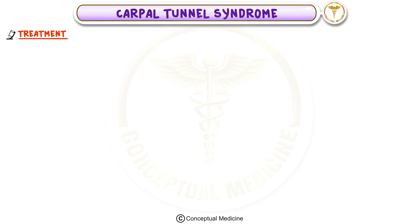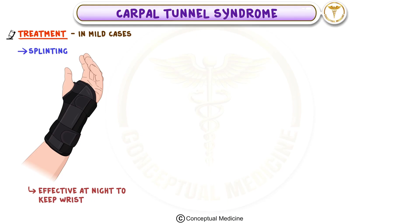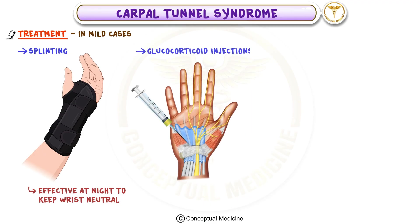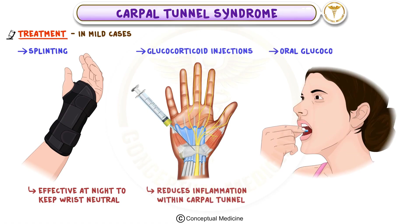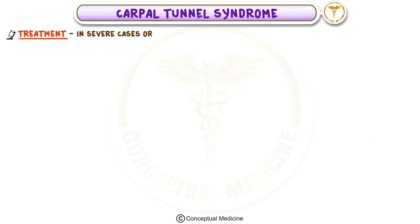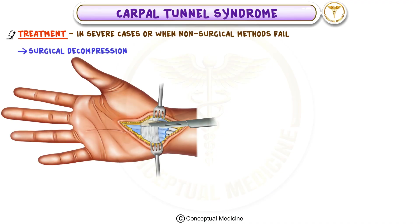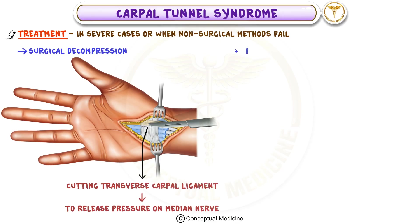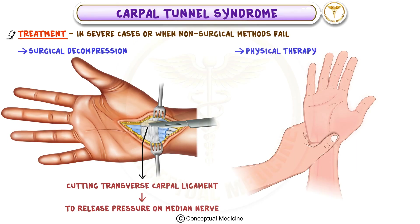Treatment depends on the severity of the condition. In mild cases, we start with splinting, especially at night, to keep the wrist in a neutral position and reduce pressure on the nerve. If splinting doesn't provide enough relief, a doctor may inject glucocorticoids directly into the carpal tunnel to reduce inflammation. Oral glucocorticoids may be used as a last resort if injections are not effective. In severe cases, or when non-surgical methods fail, surgical decompression is performed, involving cutting the transverse carpal ligament to release pressure on the median nerve. Physical therapy may also be helpful when combined with other treatments.